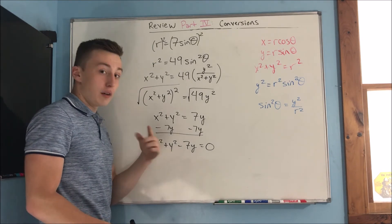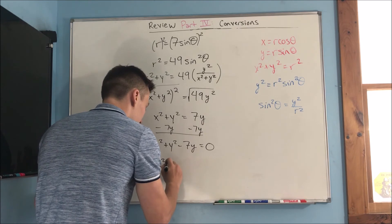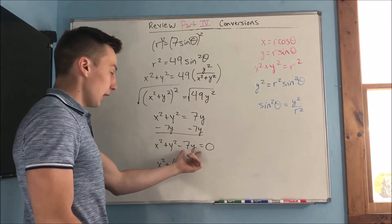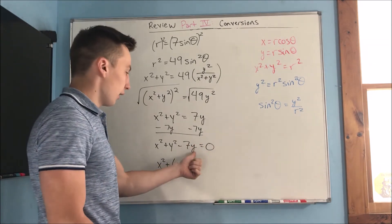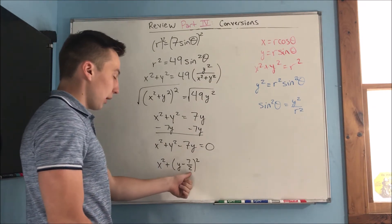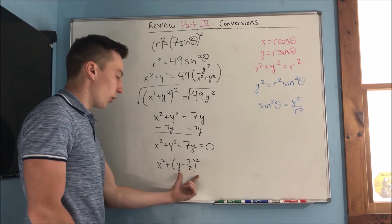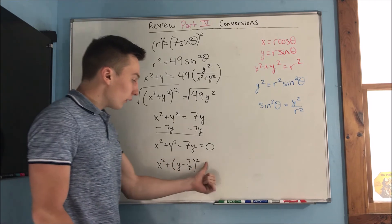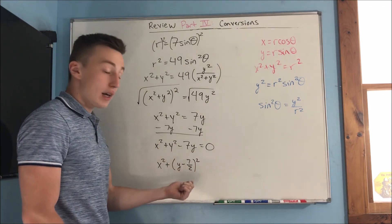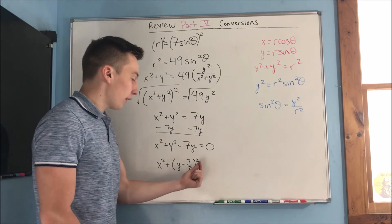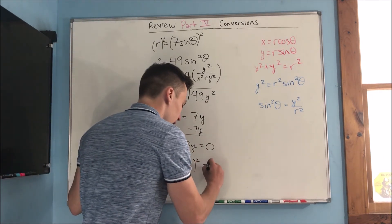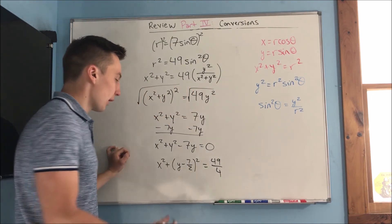We can do a bit of completing the square here to get x squared plus (y minus 7/2) squared. To complete the square, divide the middle term's coefficient by 2 and place it in the binomial squared. We get 49 over 4 from (minus 7 halves) squared, so we need 49 over 4 on the other side as well. The final answer is x squared plus (y minus 7/2) squared equals 49 over 4.